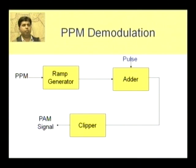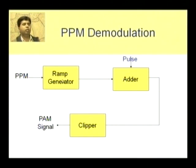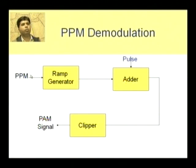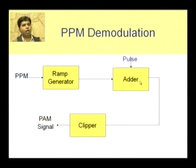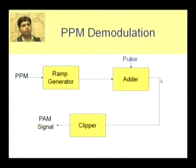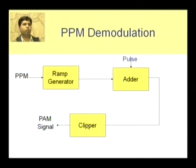Now we come to PPM demodulation. For PPM demodulation we are again using a ramp generator. The height of this ramp depends upon the position of the pulses. Then again we are adding a constant amplitude and constant width pulse and applying it to a clipper.